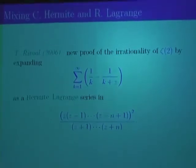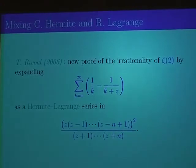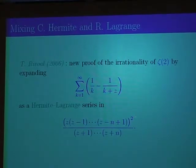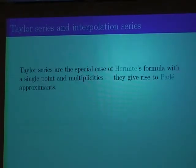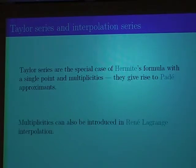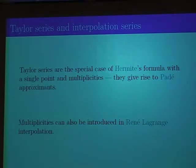Once you see both formulae by Hermite and Lagrange, it's possible to mix them — using sometimes one, sometimes the other. This is what Rivoal did to get a new proof of the irrationality of ζ(2). The Hermite-Lagrange series he uses is a fraction with a numerator of degree twice the degree of the denominator. Looking at Taylor series, these are special cases of Hermite's formula when all the interpolation points coincide with multiplicities, giving rise to Padé approximants. One can similarly develop a theory with rational interpolation using Lagrange's formula.